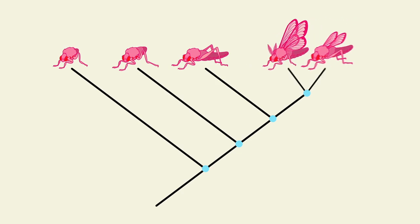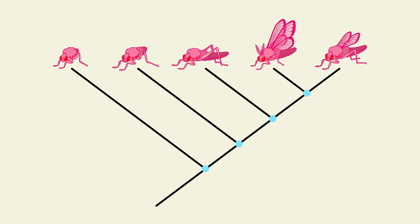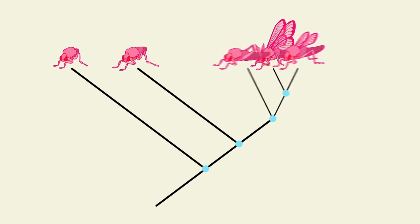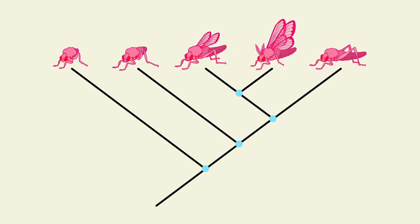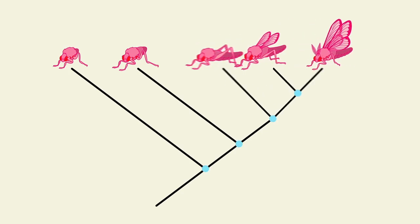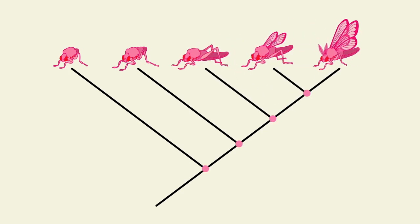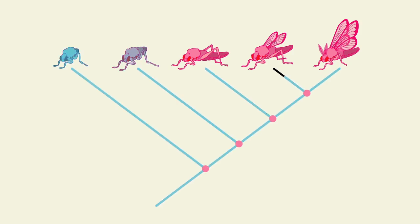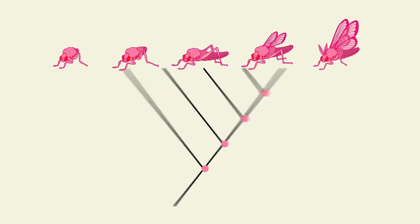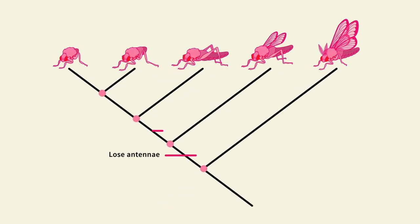If we rotate the branches around a node, the tree still shows the same relationships. All of these trees, because the nodes are in the same relative order, are equivalent. Another thing to call out is that we made an assumption when we drew our tree — we assumed that the lineages evolved from simple to complex. But we could have just as easily drawn our tree with each branch point representing the loss of a trait. How do we know which one is more likely?